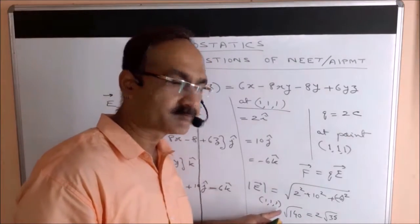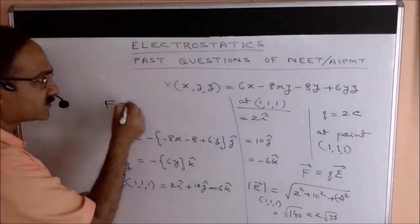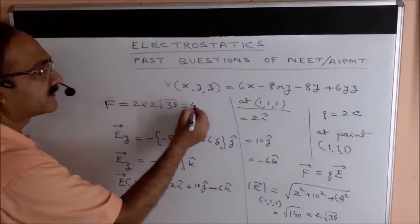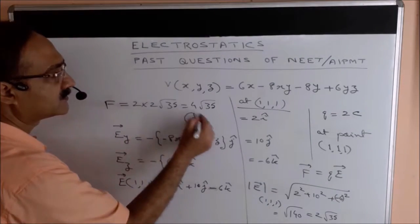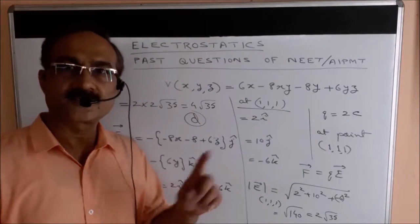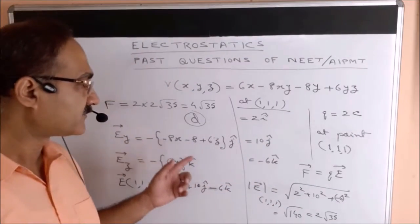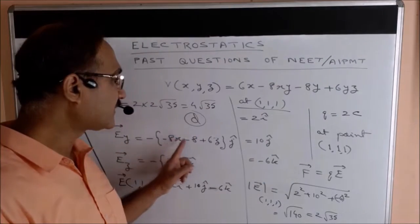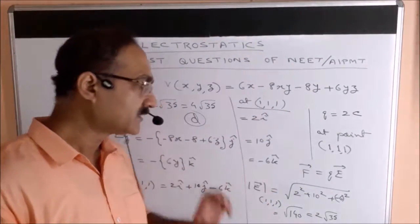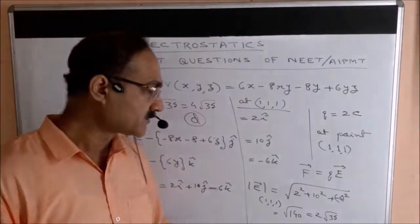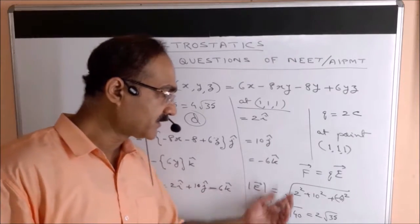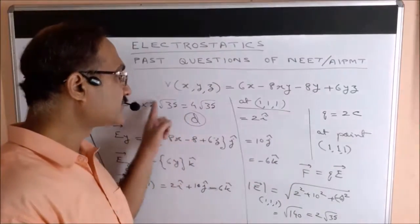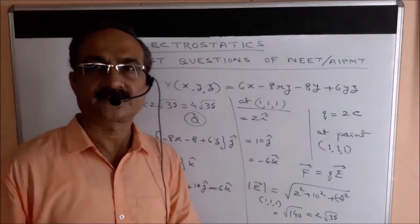The required force is F = Q × |E| = 2 × 2√35 = 4√35. Looking at the options, this corresponds to option D. Compared to the 2009 question, here we additionally had to evaluate the electric field at a specific point by substituting x = y = z = 1, find its magnitude, and then multiply by the charge to get the force experienced by the 2-coulomb charge.